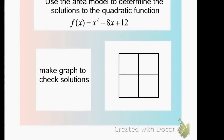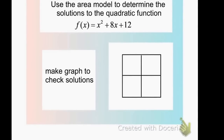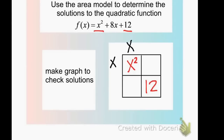On the next slide, we want to start with standard form and write it in intercept form — a little different from what we did last time. We take x squared and put it in the first box, and 12 goes in the last box. We need numbers that multiply to give us x squared — so x times x — and numbers that multiply to give us 12, but also add to give us the middle term, 8.